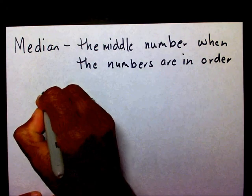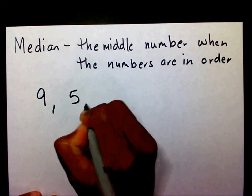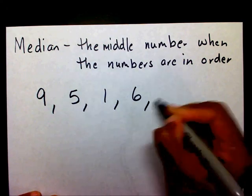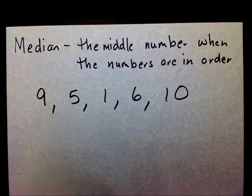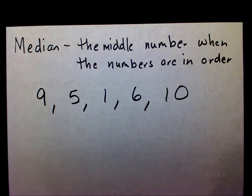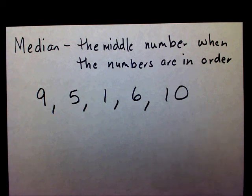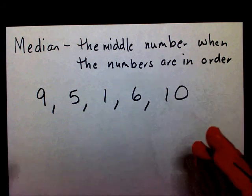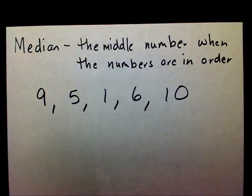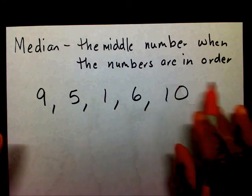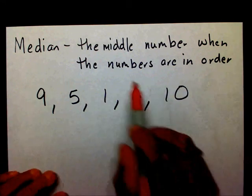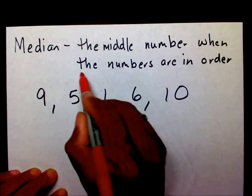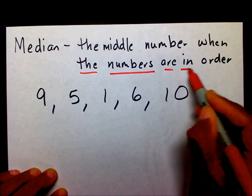Let's say I had 9, 5, 1, 6, and 10. The mistake that most students make is that they just find the number in the middle without doing that second part — they totally forget about it. The numbers have to be in order.